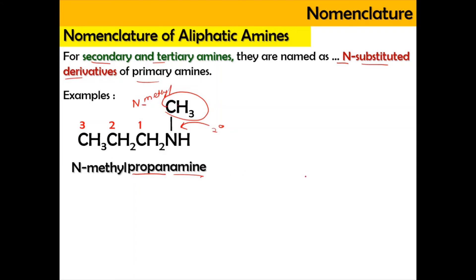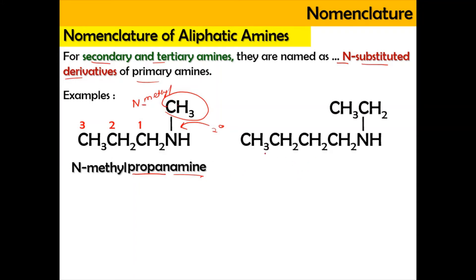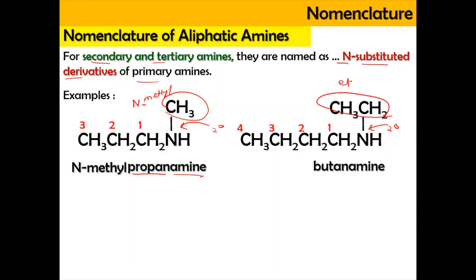For another example, we find the longest carbon chain next to the nitrogen: one, two, three, and four — so this is the longest chain, making it butanamine. It is a secondary amine with an ethyl group attached at N. So it is going to be N-ethylbutanamine.